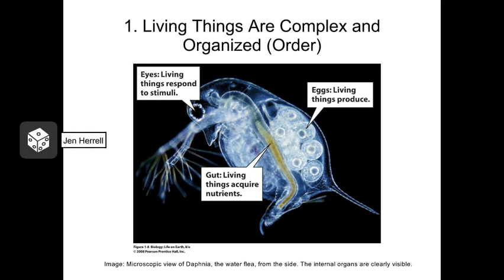So if you decided that yes, this organism is alive, you are absolutely correct. This little critter is known as a Daphnia, or a water flea. They're totally harmless — they don't bite you. They're microscopic, and they live in freshwater. They use these long mouth appendages to catch little things in the water, such as paramecia. Now, what is it that tipped you off that this was a living thing?